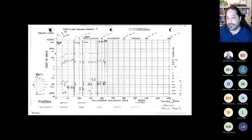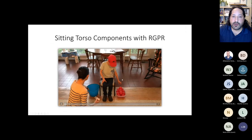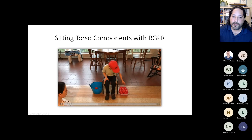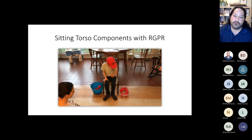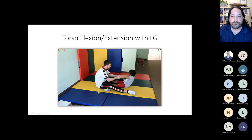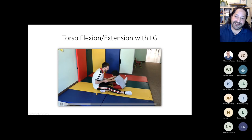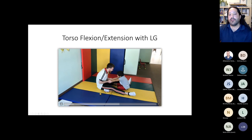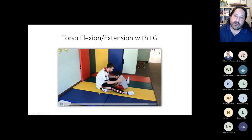Here's how we put all the torso components together with an RGPR. What's also cool is we're getting some neck motion for free. This learner is enjoying it. The learner is doing the extension where he's moving himself back, and the instructor is pulling him forward to kind of reset him — this is an alternate way to get extension if your learner doesn't like laying on their stomach.